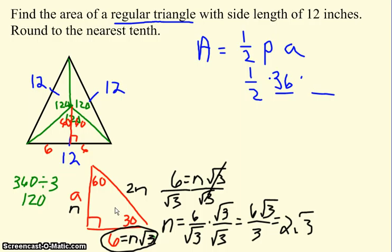So I would get my n to be 2 root 3, and so if n is 2 root 3, I actually just found my apothem, because opposite the 30 was my apothem, and opposite the 30 is n. Since n is 2 root 3, I could go ahead and plug that in.